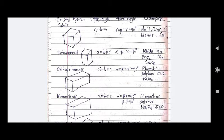Then comes orthorhombic: a ≠ b ≠ c, and alpha = beta = gamma = 90°. Example is rhombic sulfur, KNO3, and BaSO4. Then comes monoclinic: a ≠ b ≠ c, alpha = gamma = 90° but beta ≠ 90°. The example is monoclinic sulfur.